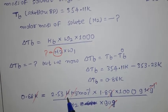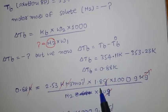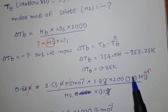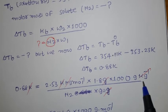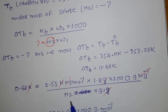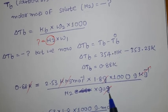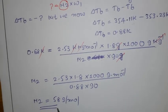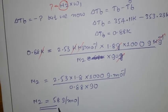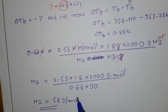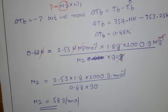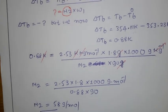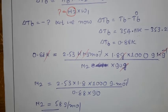Substituting: 0.88 = 2.53 × (1.80 × 1000) / (M2 × 90). Solving for M2 gives the molar mass of solute = 58 grams per mole. This is how we can calculate the molar mass of a solute using elevation in boiling point.